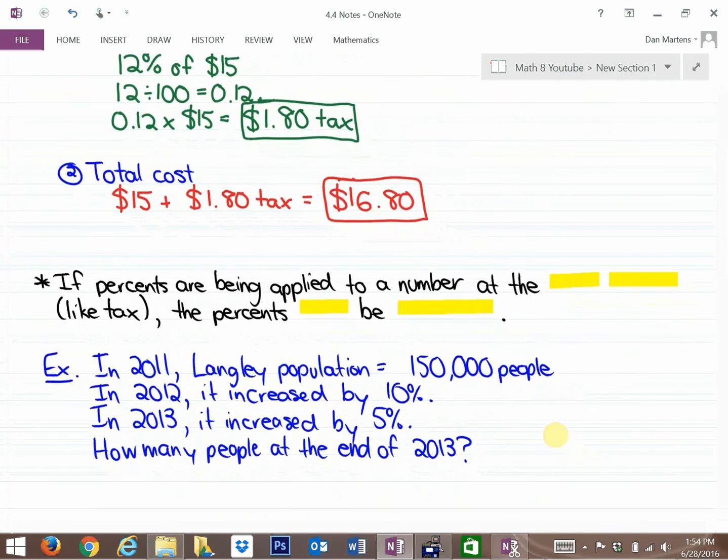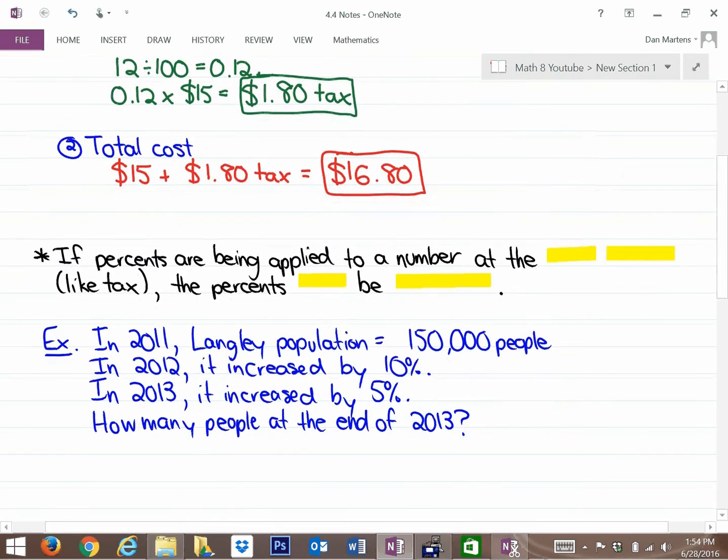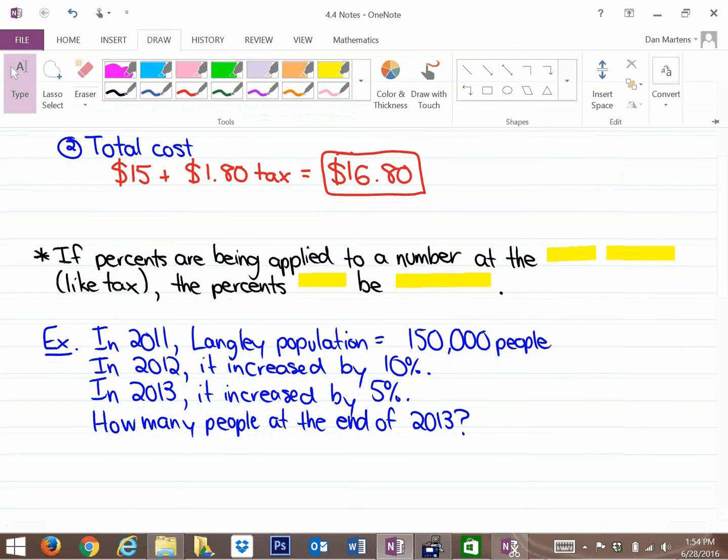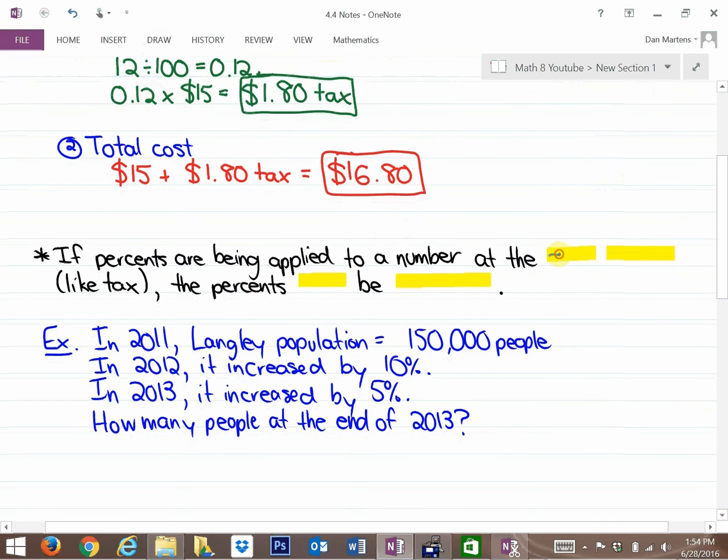So the big takeaway from this particular question is the following: If percents are being applied to a number at the same time, like this question here with tax, the percents can be combined.